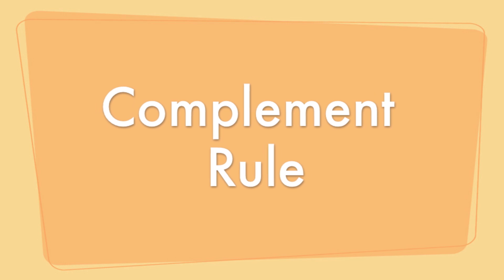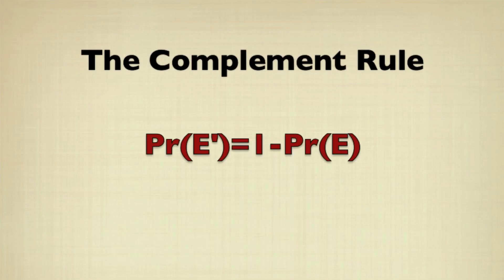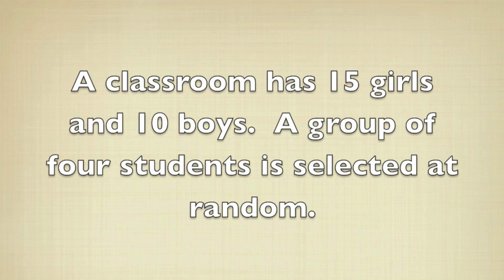One rule that's going to make our life easier in many situations is the complement rule and all it says is that the probability of the complement of event is 1 minus the probability of the event. To illustrate this, let's look at this example.